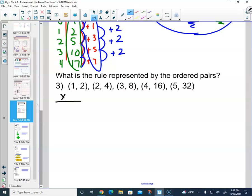We have (1,2), (2,4), (3,8), (4,16), and (5,32).